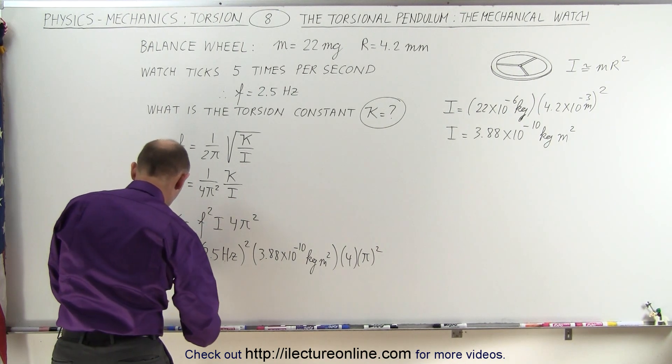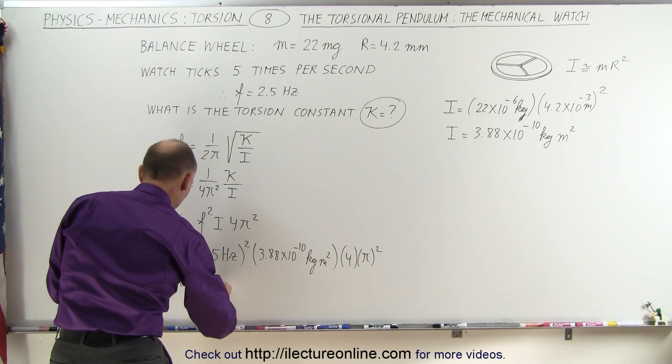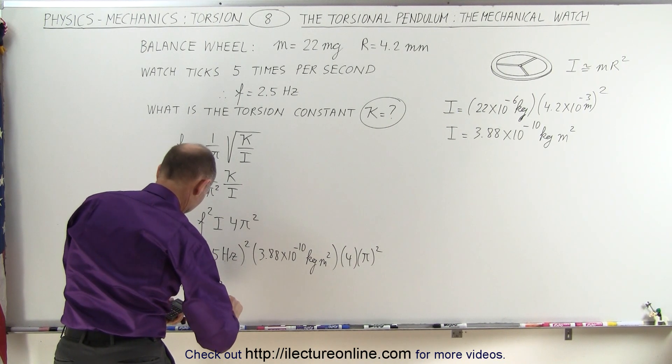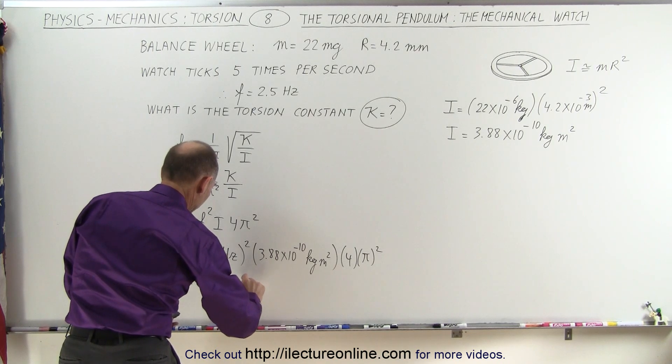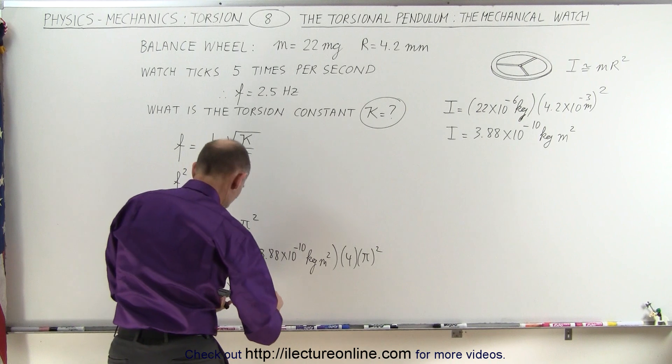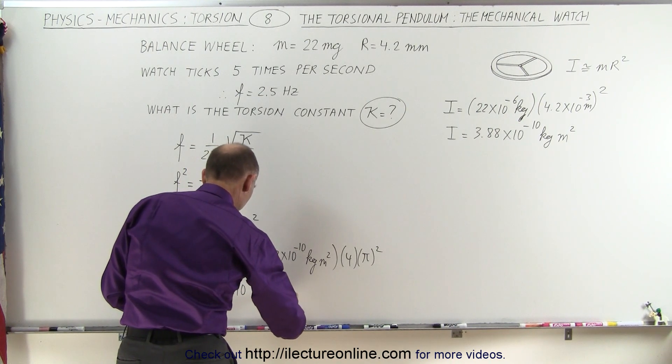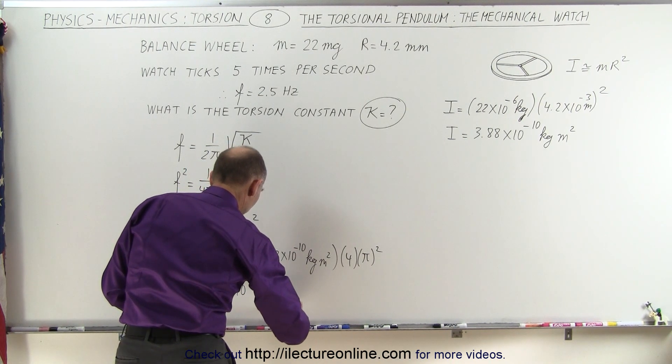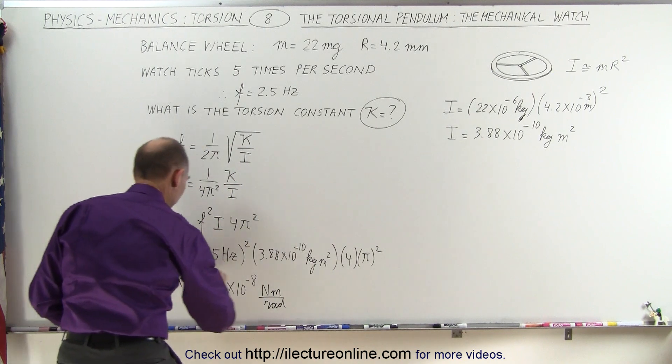The torsional constant is equal to 9.58 times 10 to the minus 8. Now units-wise, that would be Newton meters per radian. So that's really the proper units.